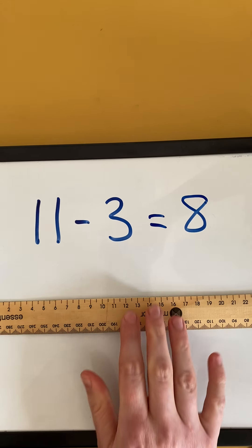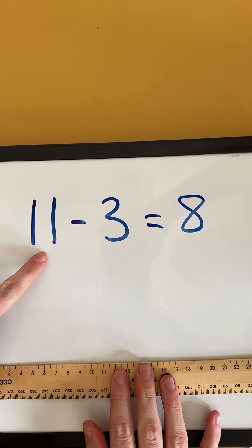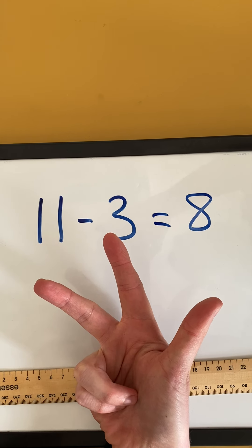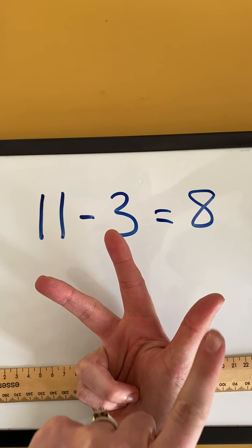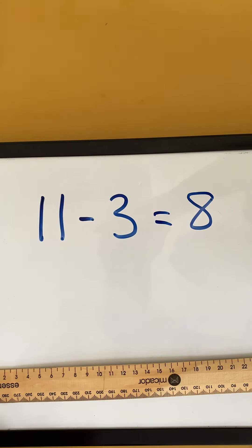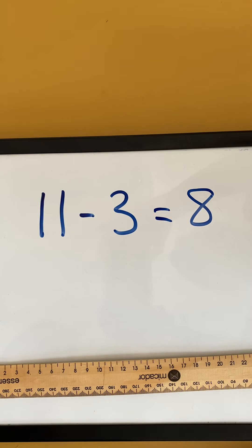Again, I could do this on my fingers. So I start with 11 and I'm going to put up 3 fingers and I'm going to count back. So I put 11 in my head, I'm going to count back 10, 9, 8. So that's my counting on and my counting back strategy.